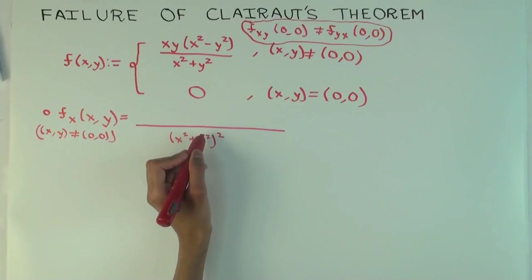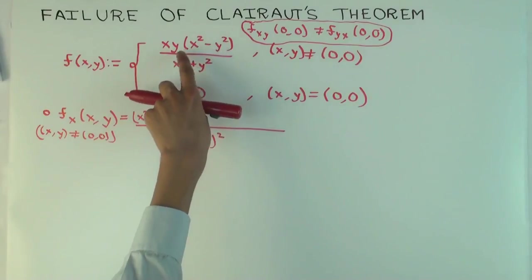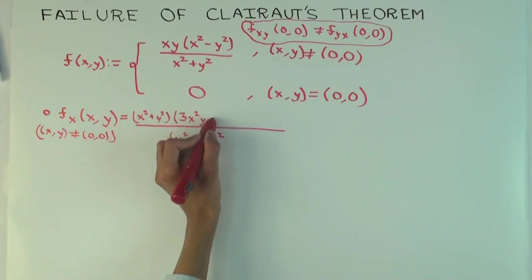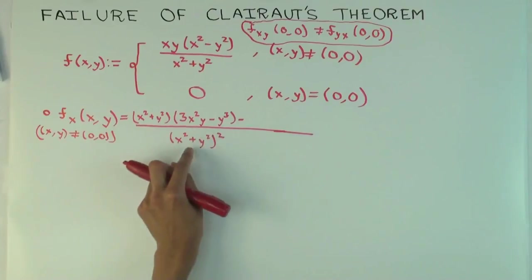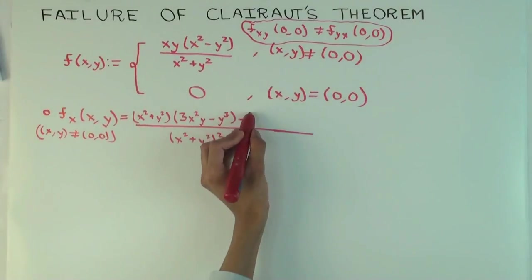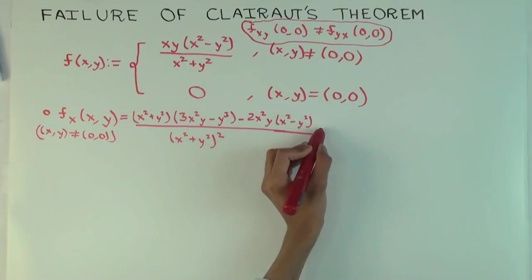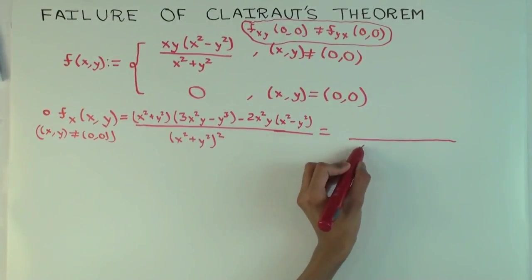Okay, now you will get denominator times the derivative of the numerator. So, x squared plus y squared. Now, the numerator is x cubed y minus xy cubed. x cubed y differentiates to 3y x squared, x squared y. And xy cubed differentiates to y cubed.